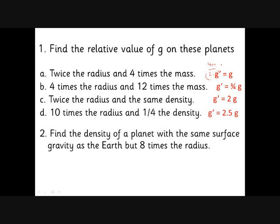Find the density of a planet with the same surface gravity as the earth but eight times the radius. Writing g = GM/R² and substituting M = (4/3)πR³ρ, the R² terms cancel, leaving g = (4/3)πRρ. So if you have eight times the radius and one-eighth of the density, you end up with the same gravity. The new density must be the old density divided by eight.